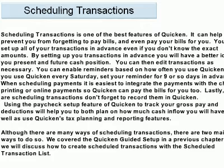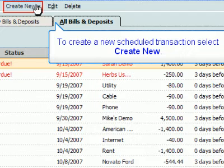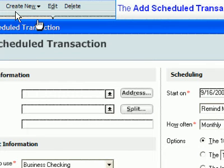Although there are many ways of scheduling transactions, there are two main ways to do so. We covered the Quicken guided setup in a previous chapter. Here, we will discuss how to create scheduled transactions with the scheduled transaction list. Select Create New, then select the scheduled transaction menu item. The Add Scheduled Transaction dialog opens.